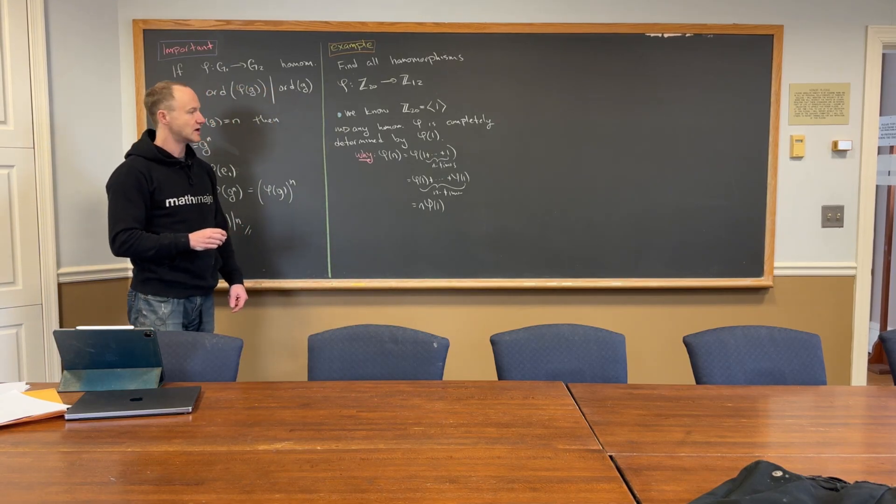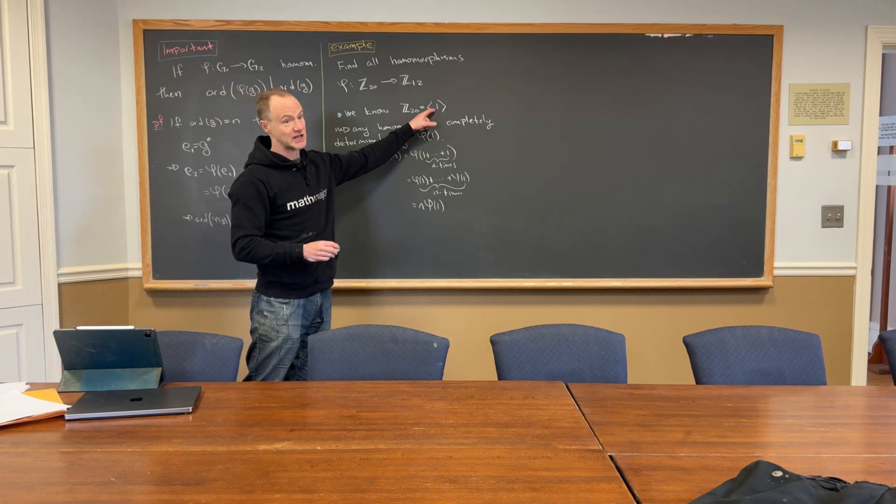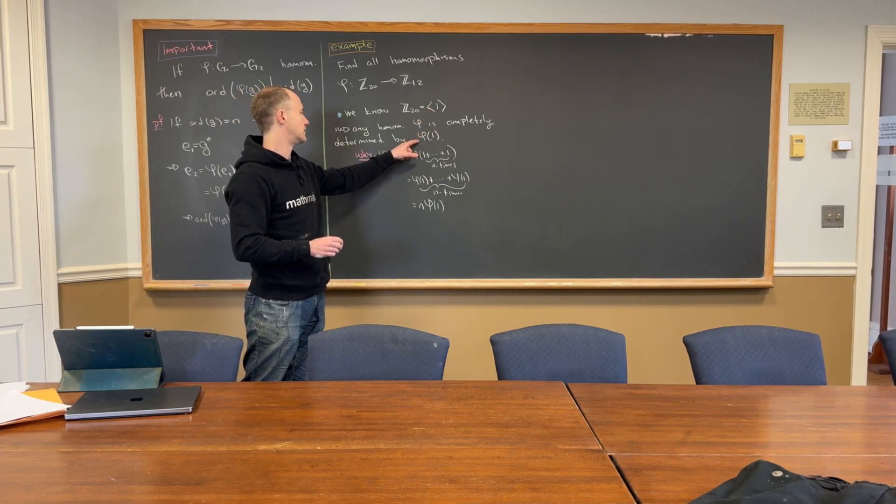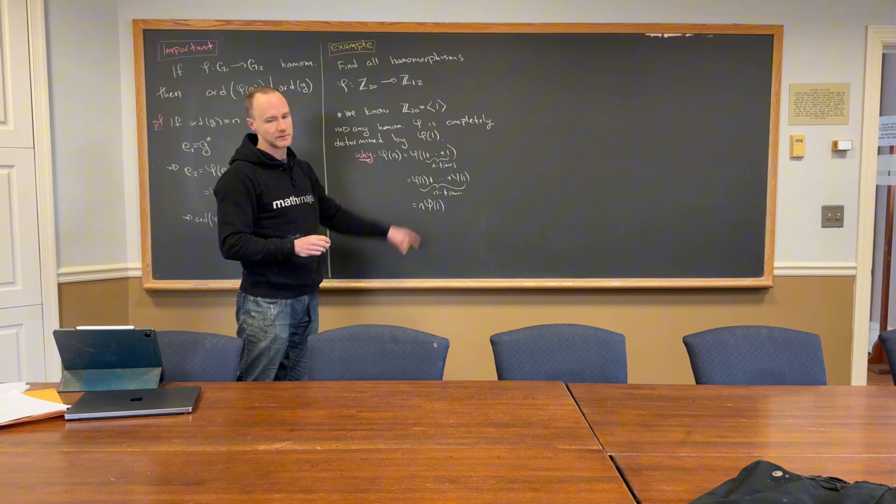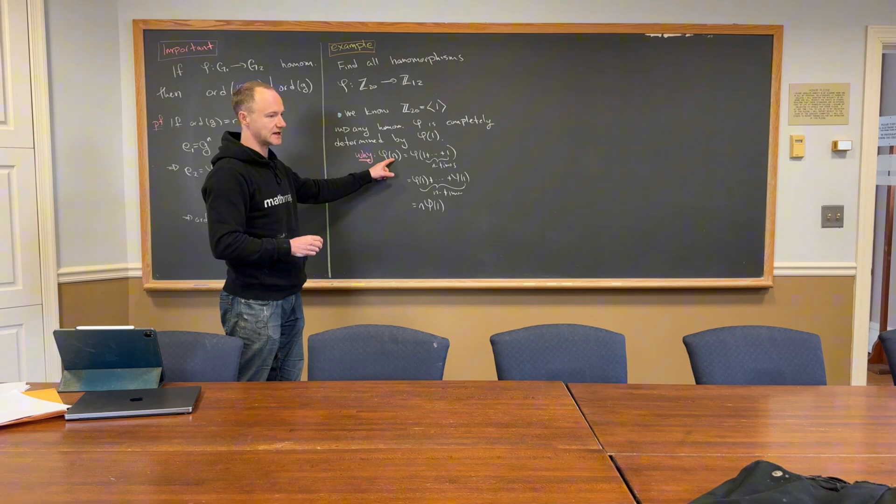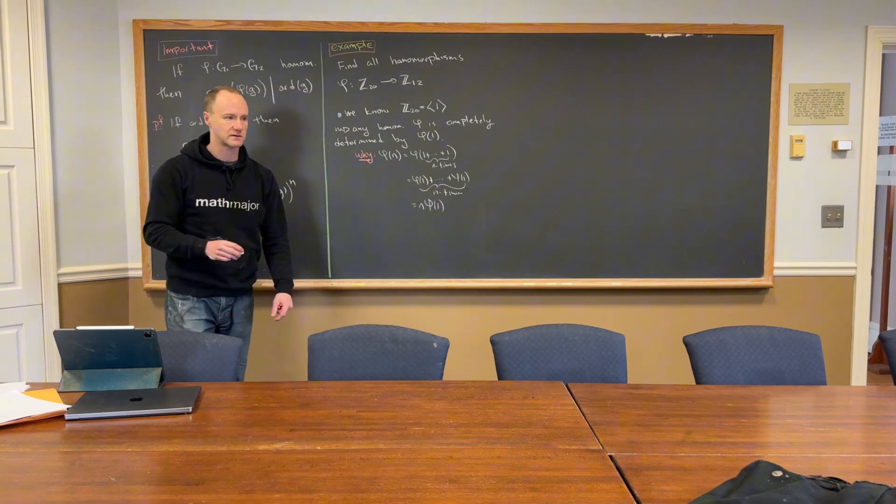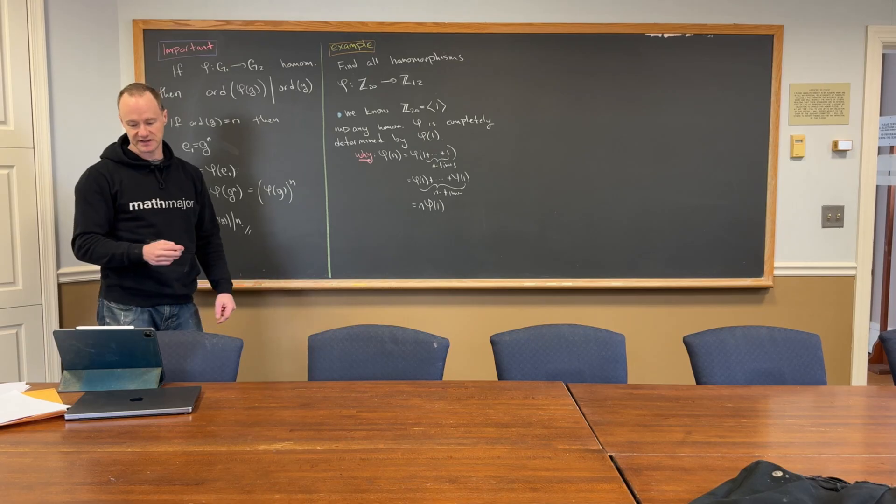And this is true for any cyclic group, right? We could have written, like, it's completely, if it's generated by g, then the homomorphism is completely determined by what it does to g. And then it would just be g to the n here, and you would have phi of g all to the n power at the end, right? It's essentially the same kind of thing.